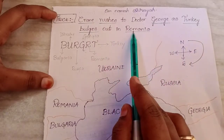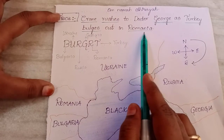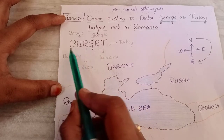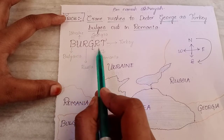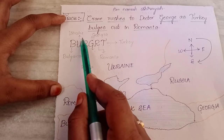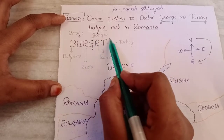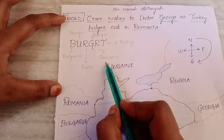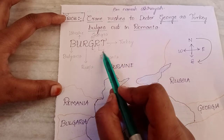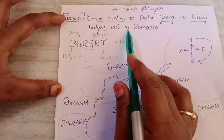If you don't want to learn that sentence, you can use this mnemonic instead: BURGRT — B-U-R-G-R-T. B stands for Bulgaria, U stands for Ukraine, R stands for Russia, G stands for Georgia, R stands for Romania, T stands for Turkey. BURGRT — that is the first alternative trick.